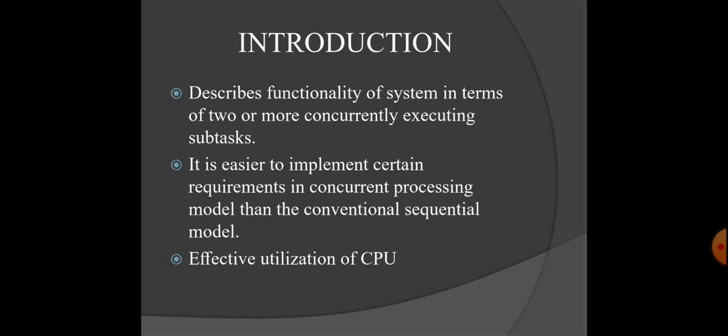The concurrent or communicating process model describes the functionality of a system in terms of two or more concurrently executing subtasks. In many systems, it's easier to describe with a concurrent process model because it is inherently multitasking.